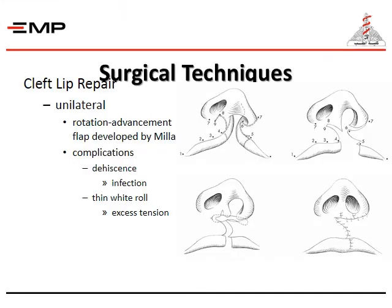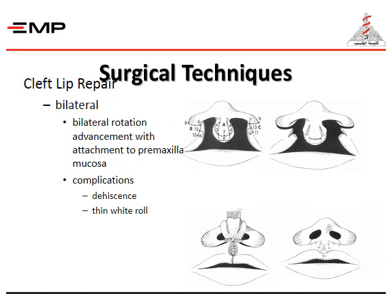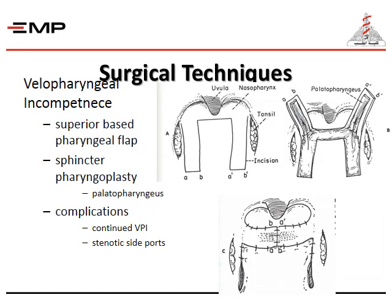For surgical techniques in cleft lip repair, in unilateral cases a rotational advancement flap developed by Millard is used. Complications of this technique include dehiscence, infection, thin white roll, and excessive tension. In bilateral cases, bilateral rotation advancement with attachment to the premaxillary mucosa is performed, with complications of dehiscence and thin white roll. These patients may also suffer from velopharyngeal incompetence, treated by a superiorly based pharyngeal flap or sphincter pharyngoplasty using the palatoglossus and palatopharyngeus muscles. Complications include continued velopharyngeal incompetence and stenotic side ports.